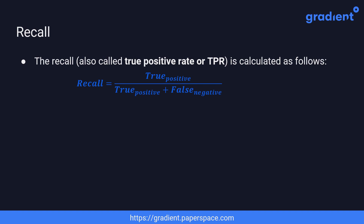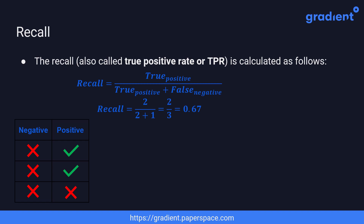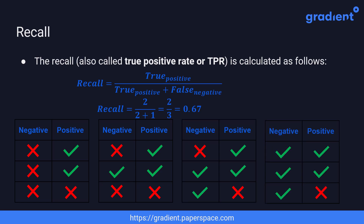Recall, also called true positive rate or TPR, is the ratio of true positives to the sum of true positives and false negatives. In an example of six samples where the model made false predictions for all negatives and one false prediction for a positive, we get two true positives and one false negative, giving a recall of 0.67. Even if the classifier makes more correct predictions for the negative class, the recall remains 0.67 — recall is completely independent of the negative samples.